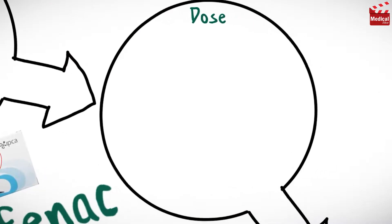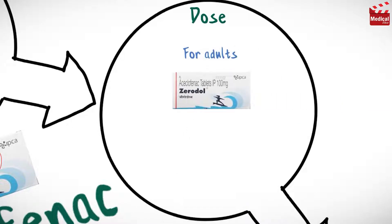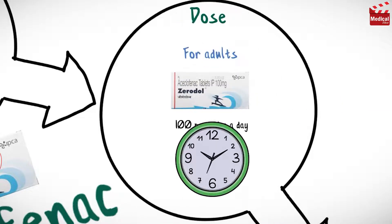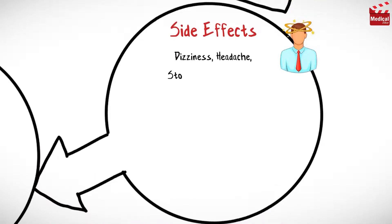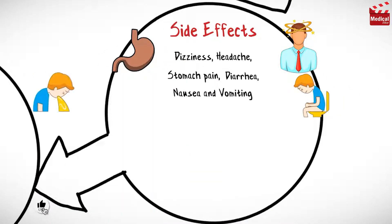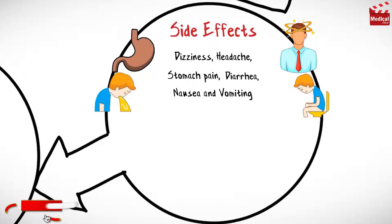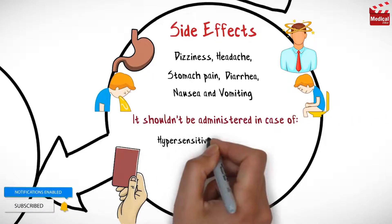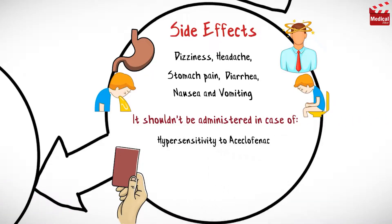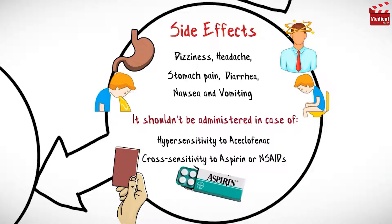The usual dose of aceclofenac for adults is 100mg twice a day. Aceclofenac may cause dizziness and headache, stomach pain, diarrhea, and nausea and vomiting.